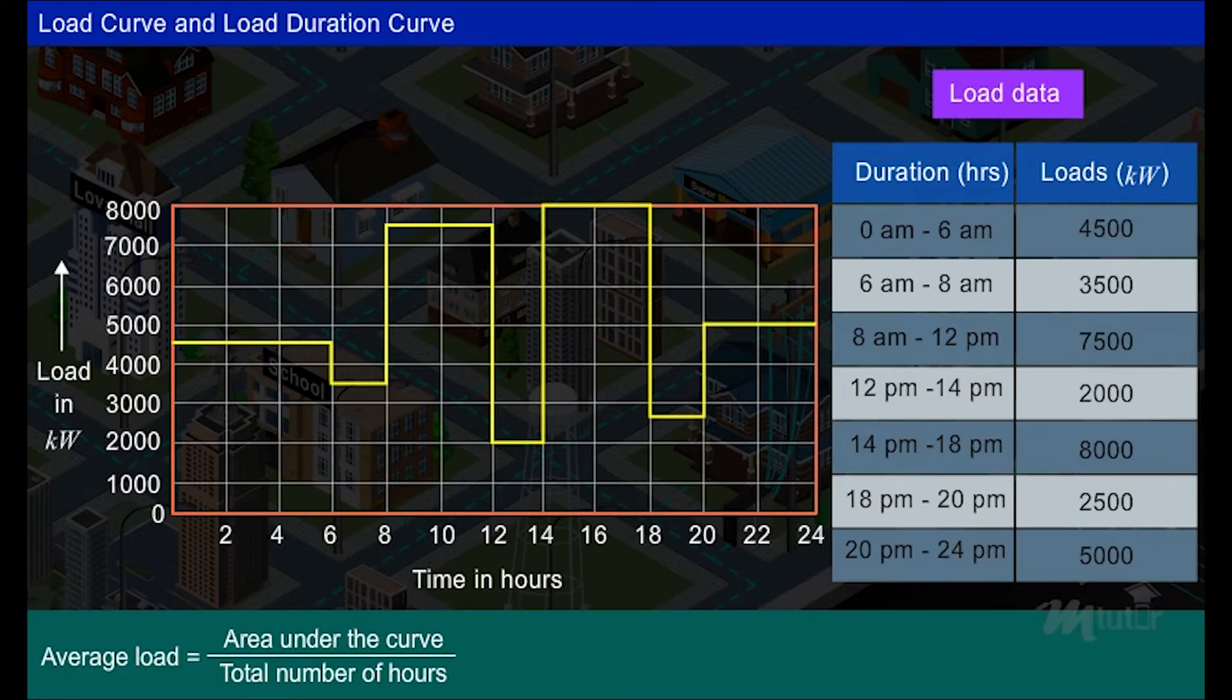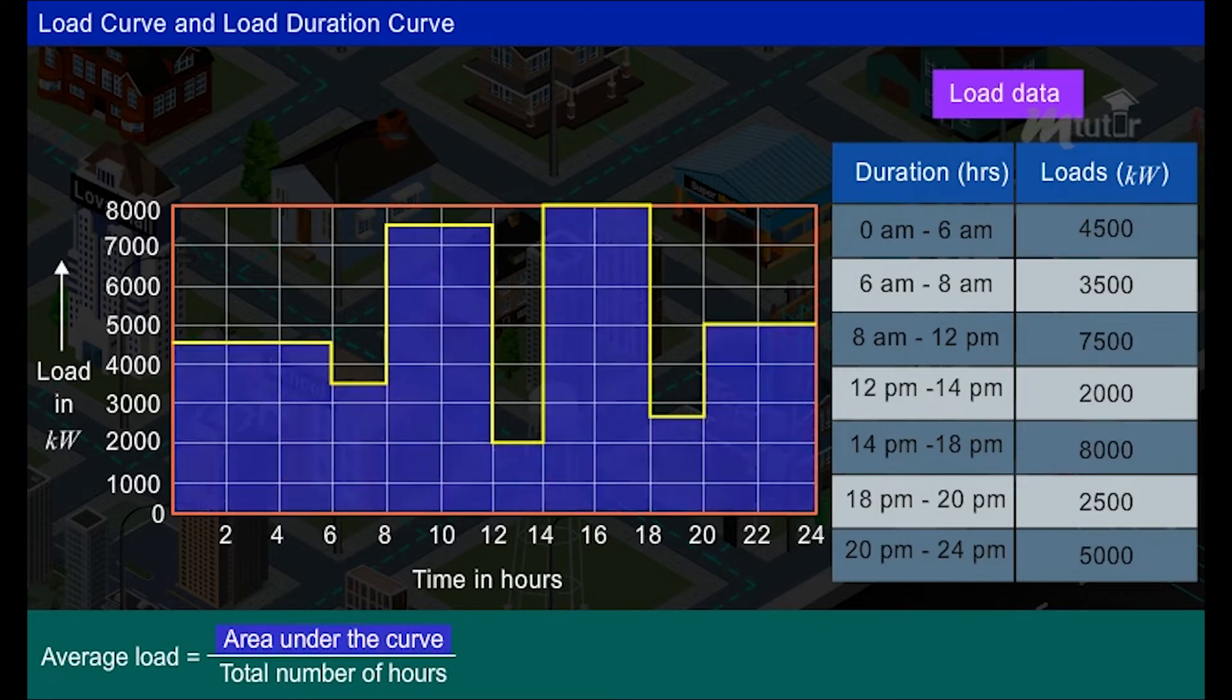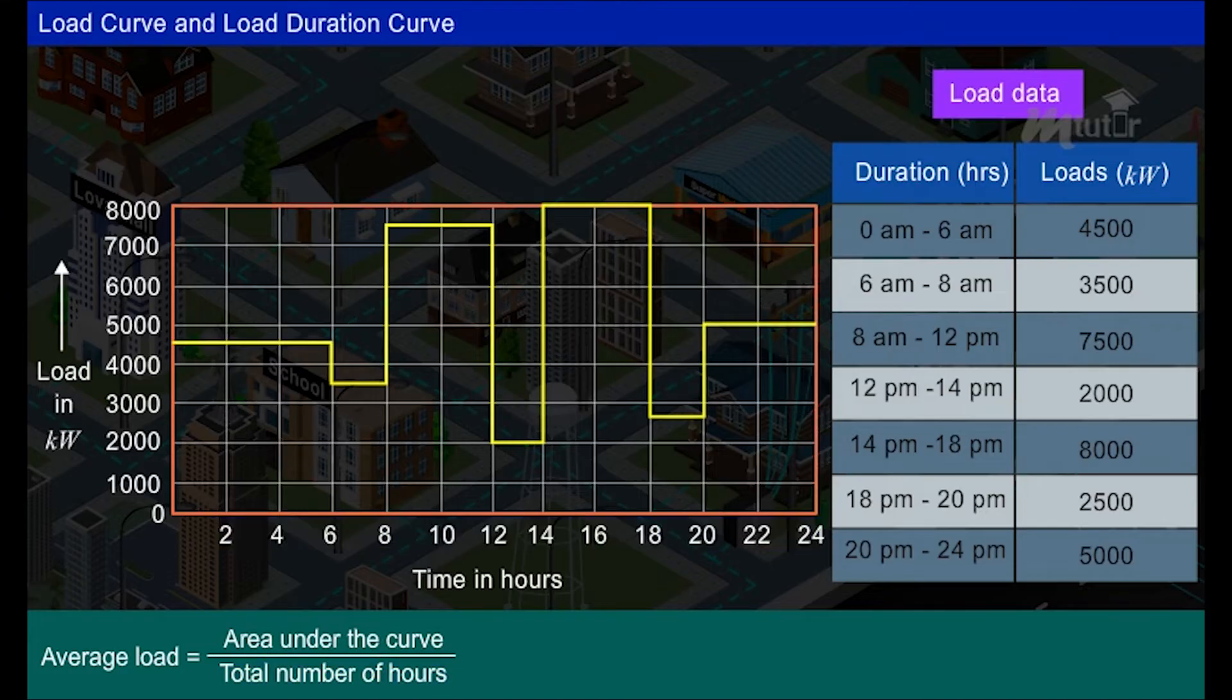From the load curve, the average load on the power station for a particular day is calculated by the area under the curve divided by the total number of hours. The average load for the Lovacity is equal to 125,000 divided by 24, that is equal to 5208 kilowatt.